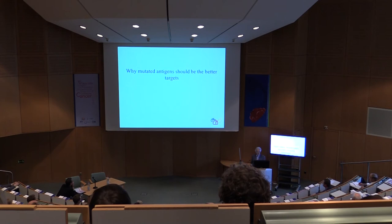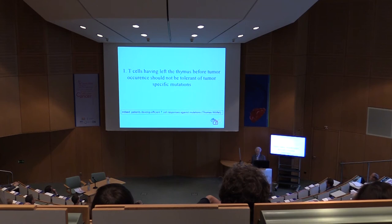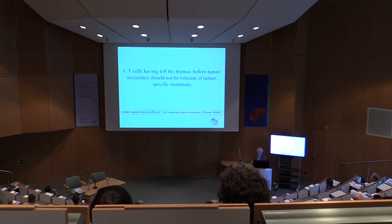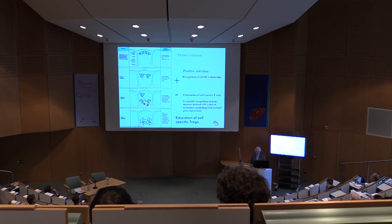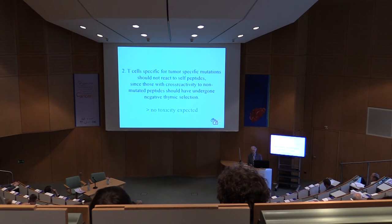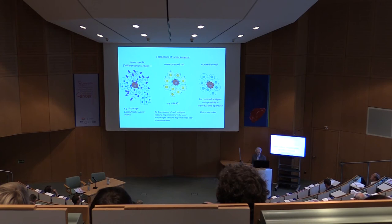Now, why should mutated antigens be the better target? This has been discussed already by Ugur Sahin. There are two trivial arguments. First, T-cells having left the thymus before the tumor occurs cannot have central tolerance against tumor-specific mutations, and Thomas Wölfel has shown that T-cells against such mutations exist in patients. Thymic negative selection can only work on things which are present — if the antigen is not there, there can be no negative selection. Second, T-cells specific for tumor-specific mutations should be rather specific and not react to any normal cell structure.